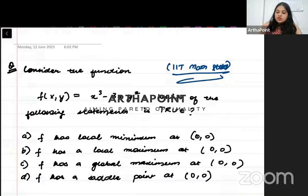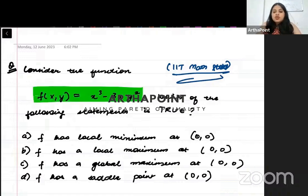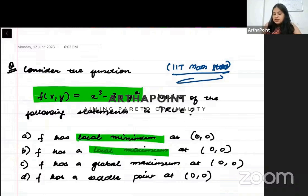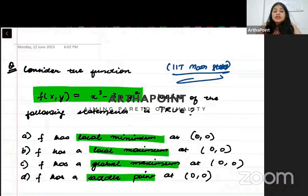The problem says, consider the function. You're given this function. Which of the following is true? It asks about the local minima, local maxima, global maxima, and saddle point. It is asking which statement is correct.